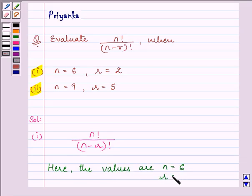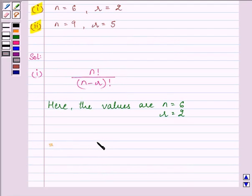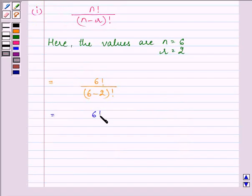Now let us substitute these values. On doing so we have 6 factorial divided by 6 minus 2 factorial, which gives us 6 factorial divided by 4 factorial.